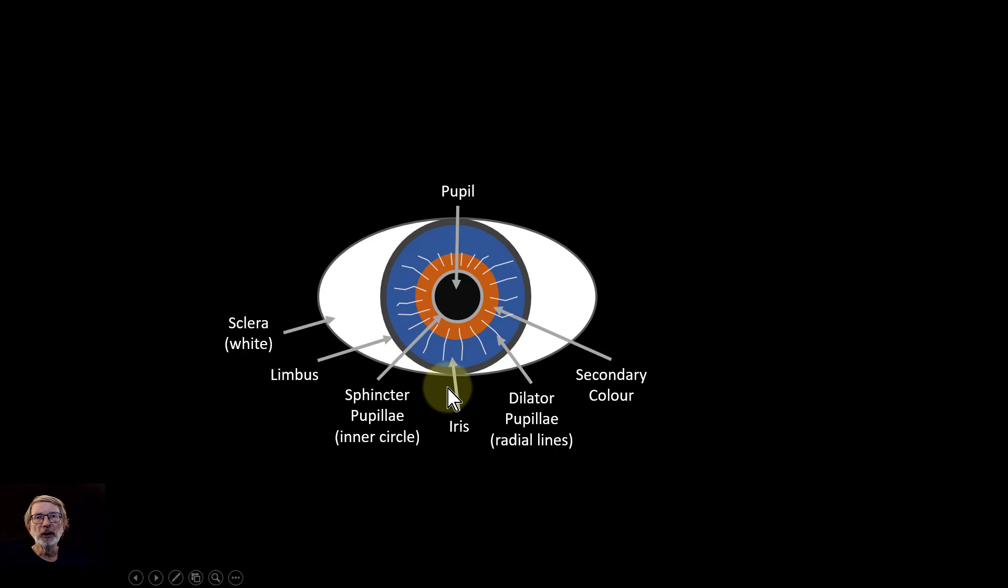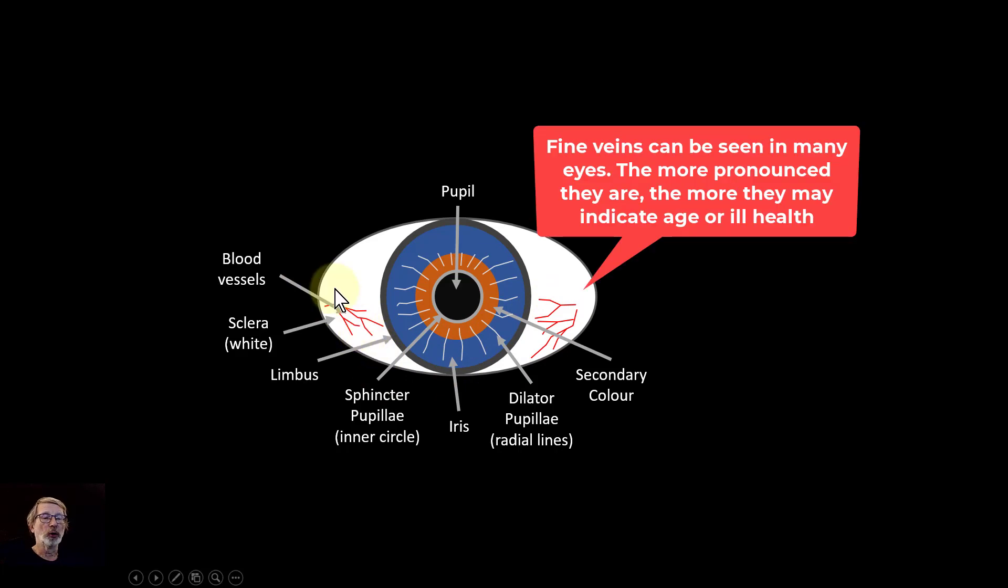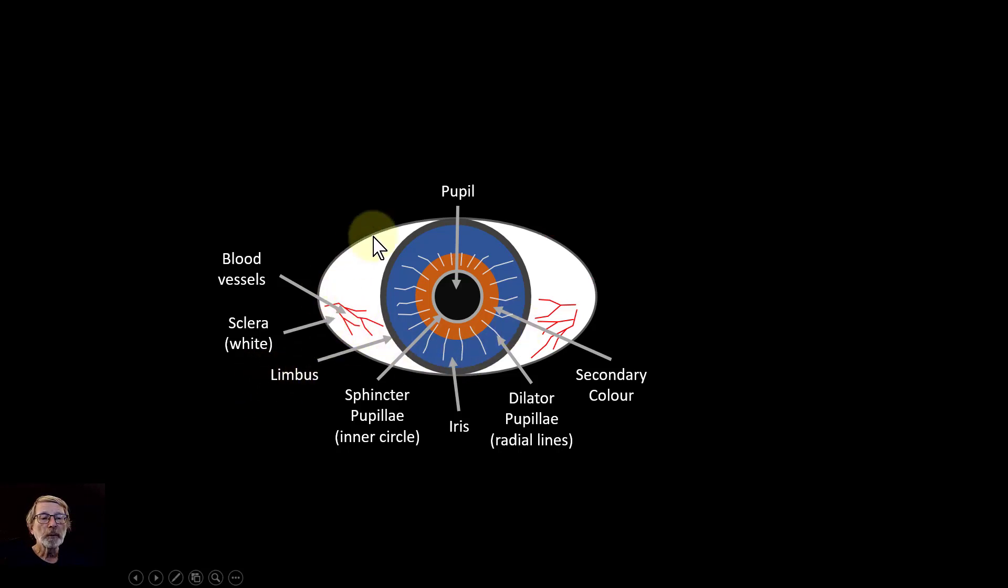So if you want to make an eye look more attractive, you can make the limbus more pronounced. Blood vessels can be an indicator of ill health or age or something wrong. It could be just an irritation in the eye, but they're generally not considered to be attractive and you often want to get rid of them. Also, while we're on the whites of the eyes here, the sclera, if this is a yellowy colour, then that can be an indicator of ill health as well. So how white it is can be significant.